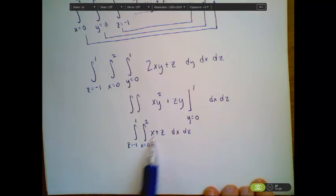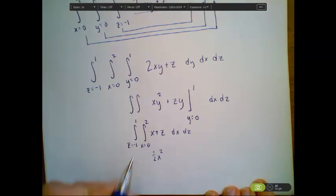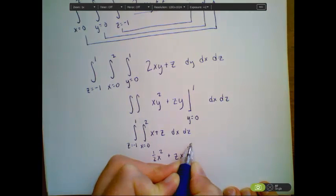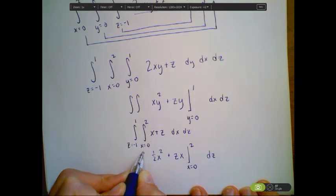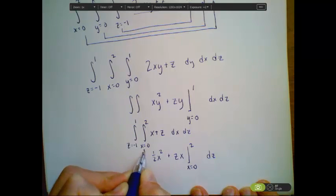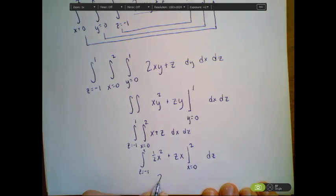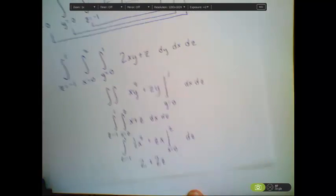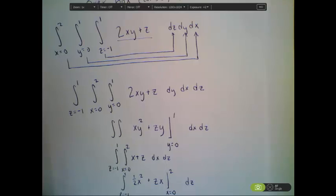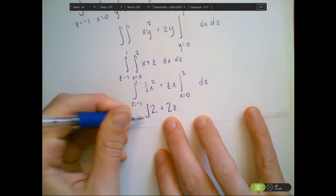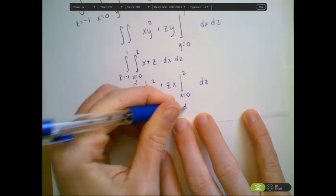x, the integral of x is going to be 1/2 x squared. z I'm treating as a constant, so I just leave it out front, and this becomes z times x, evaluated from x equals 0 to 2. Don't forget that I have this outermost z integral still. Now when I integrate x equals 0 to 2, plugging 2 in, 2 squared is 4 divided by 2 is 2, plus z times 2, 2z, minus 0, because plugging in x equals 0 makes both those terms 0. And I need another sheet of paper, because I'm running out of space.